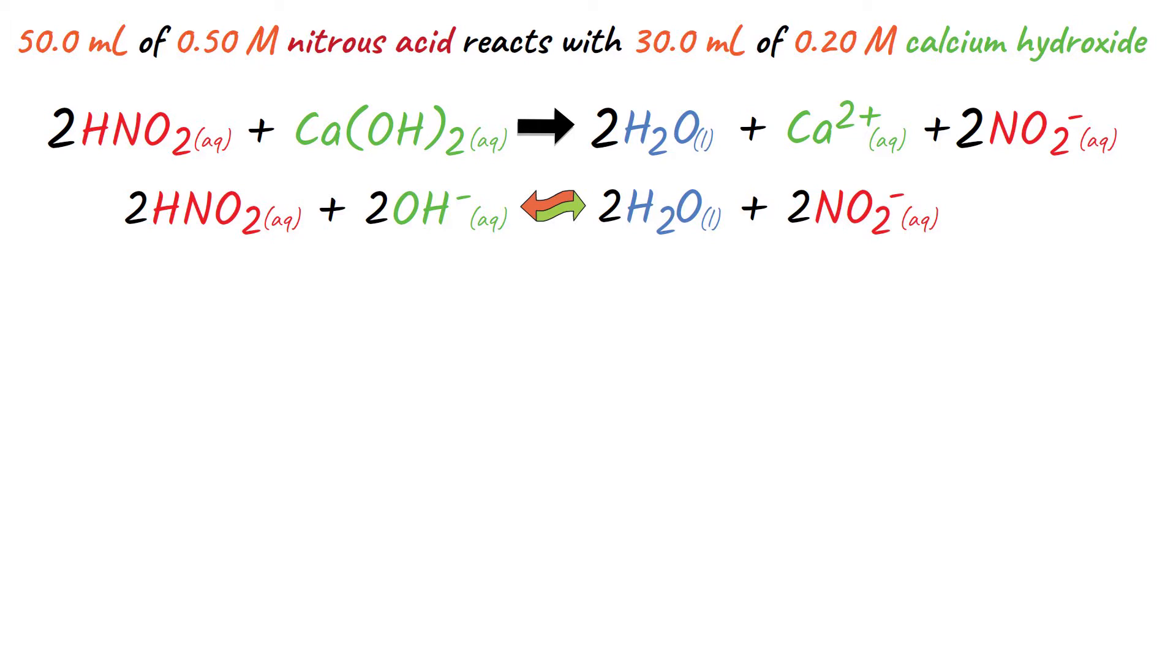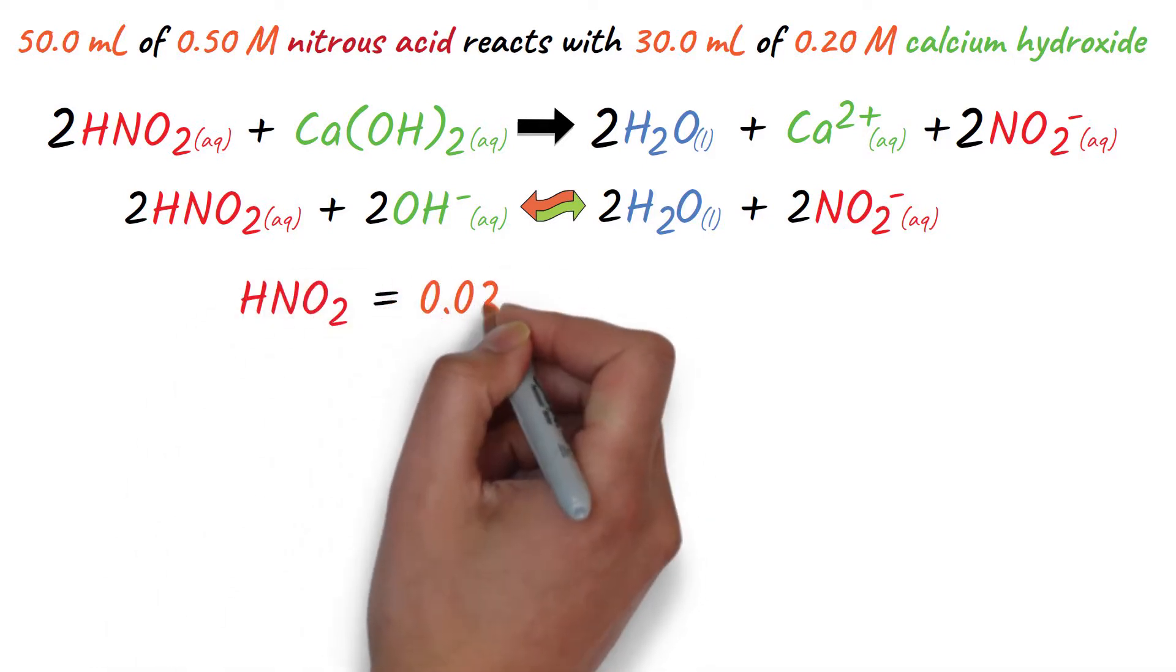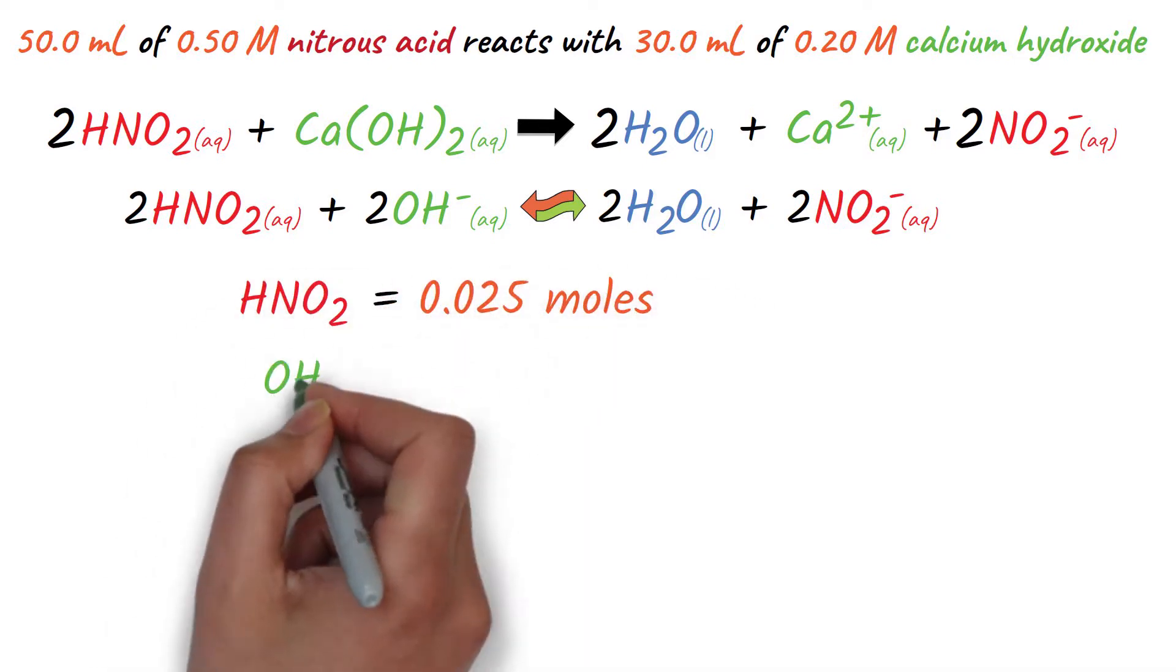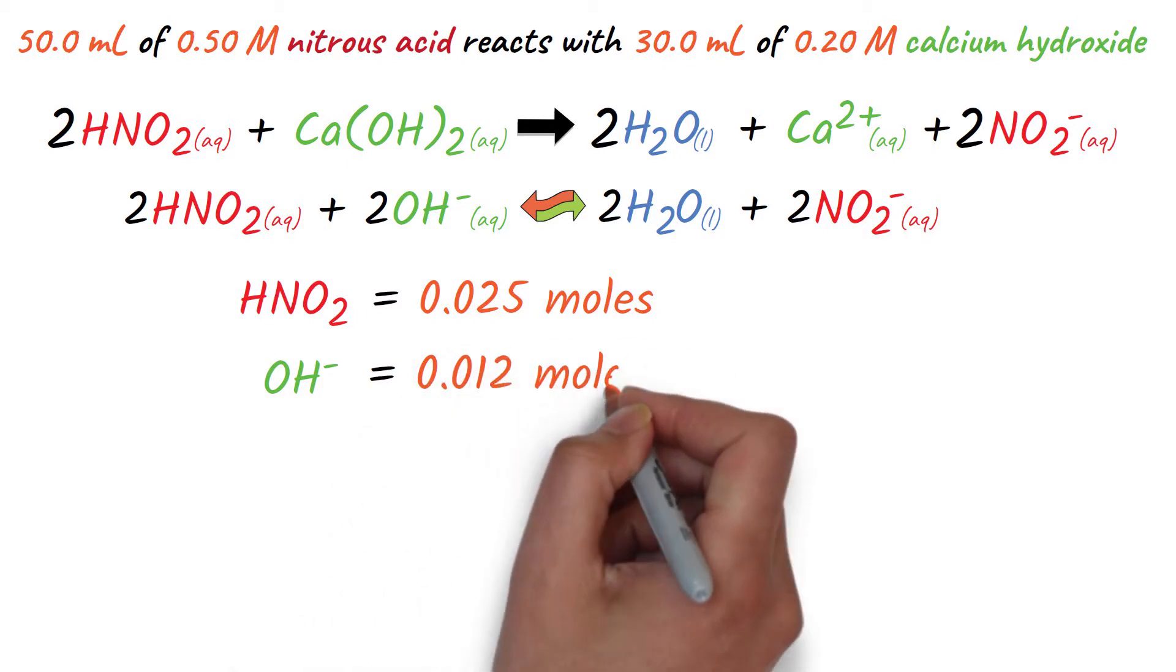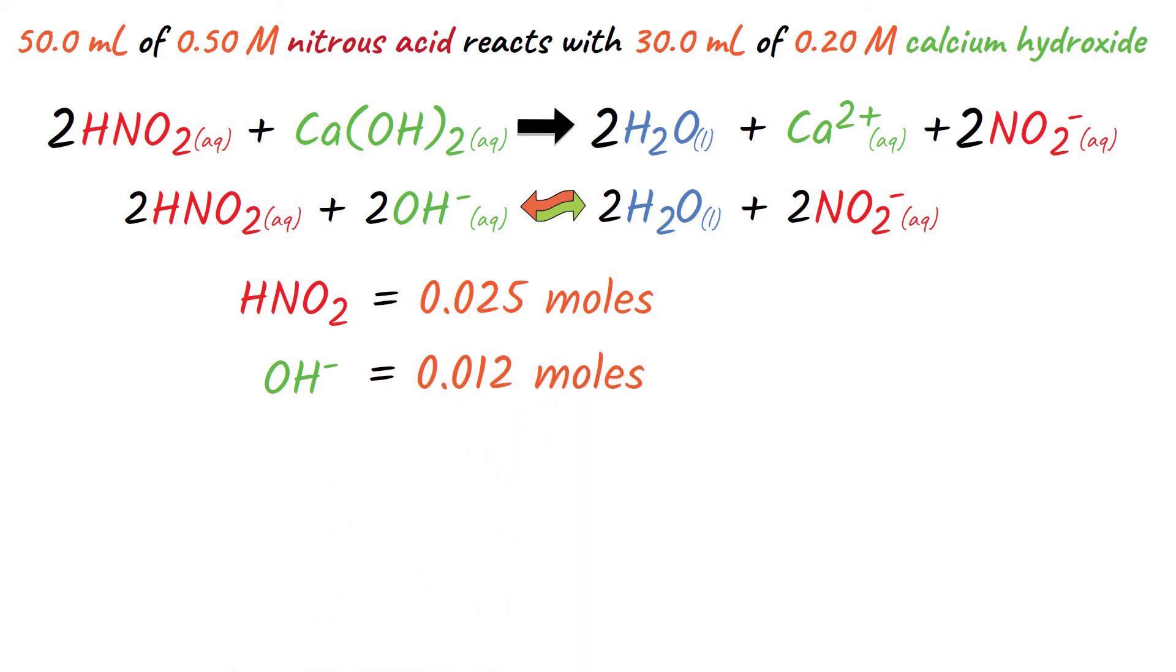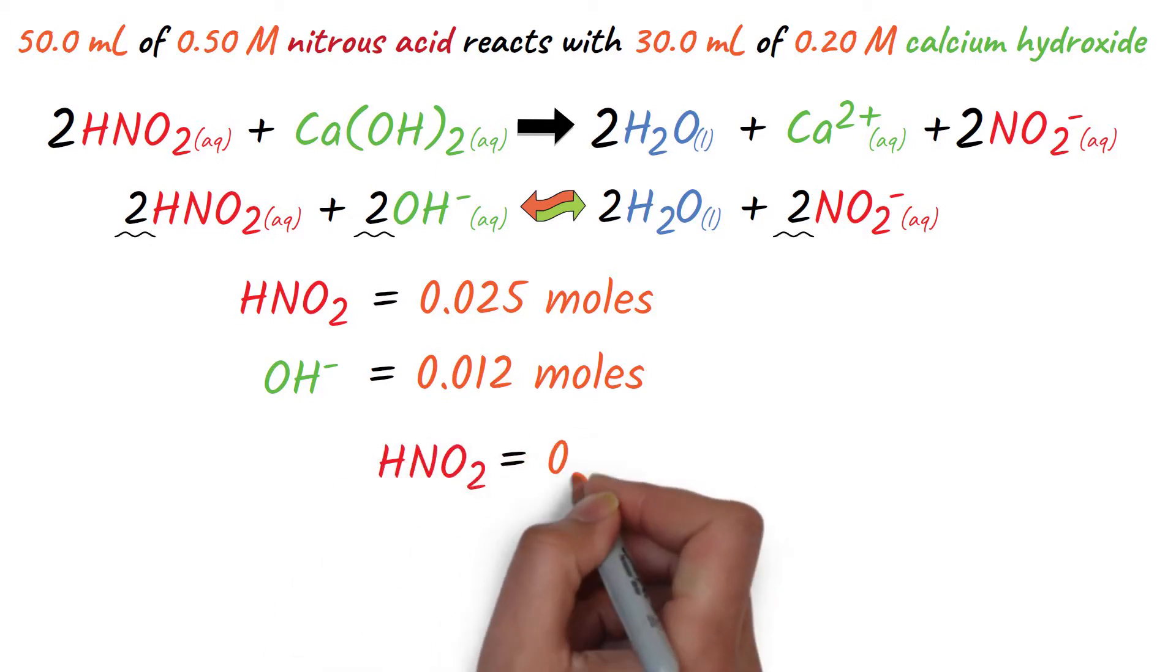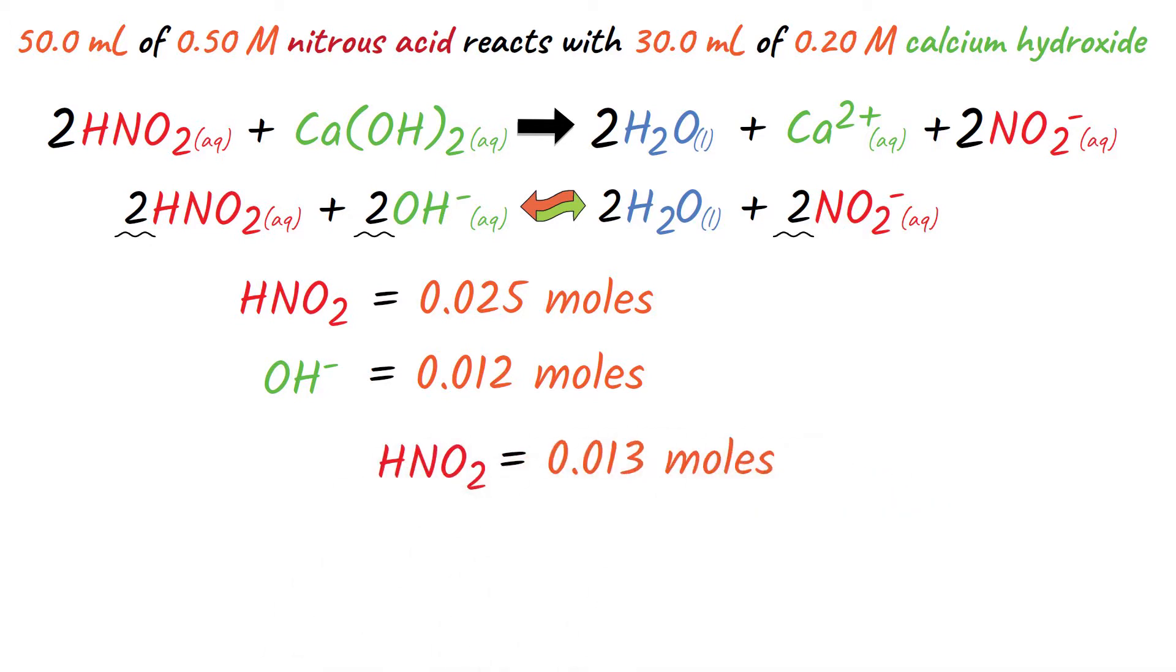Let's do the limiting reagent problem and find out which one will be in excess. The initial amounts of reactants are 0.025 moles of nitrous acid and 0.012 moles of hydroxide ion. Our molar ratio is 1 to 1. Thus, we are limited by the moles of strong base, which means that we will neutralize all of it and be left with 0.013 moles of nitrous acid. We also generate 0.012 moles of the conjugate base nitrate.